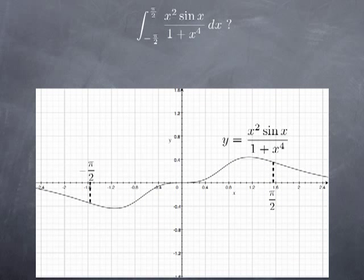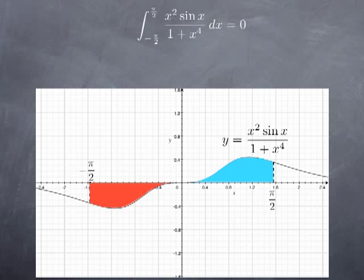This is what it looks like, and you see negative pi over 2 and pi over 2. The area between the graph and the x-axis from negative pi over 2 to 0 lies below the x-axis and is therefore counted negatively in the integral. But the area between the x-axis and the graph over the interval 0 to pi over 2 is above the x-axis but is really just the same area. The red one is counted negatively, the blue one is counted positively, and they cancel each other, so the integral ends up being 0.